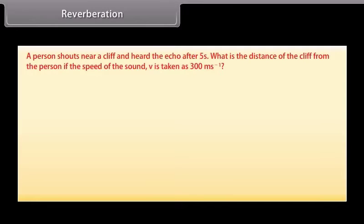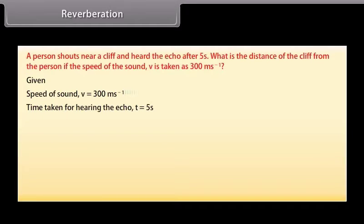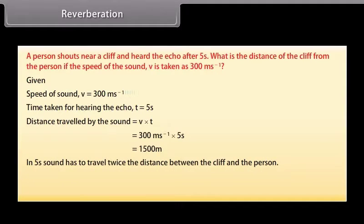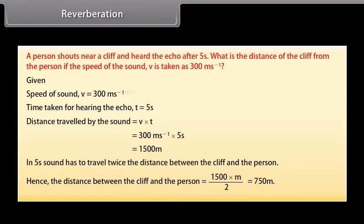Let's now solve a problem. A person shouts near a cliff and hears the echo after 5 seconds. What is the distance of the cliff from the person if the speed of the sound v is taken as 300 meters second raised to the power minus one? Given that the speed of sound v is 300 meters second raised to the power minus one, time taken for hearing the echo T is 5 seconds. Distance travelled by the sound is equal to v into T which is equal to 300 meters second raised to the power minus one into five seconds is equal to fifteen hundred meters. In five seconds sound has to travel twice the distance between the cliff and the person. Hence the distance between the cliff and the person is fifteen hundred meters by two, that is seven hundred and fifty meters.